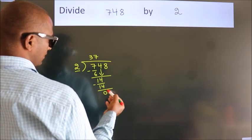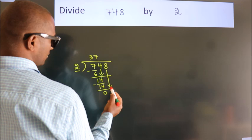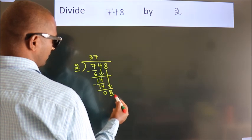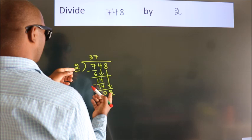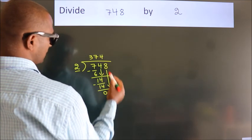After this, bring down the beside number. So 8 down, so 8. When do we get 8? In 2 table, 2 times 4 is 8.